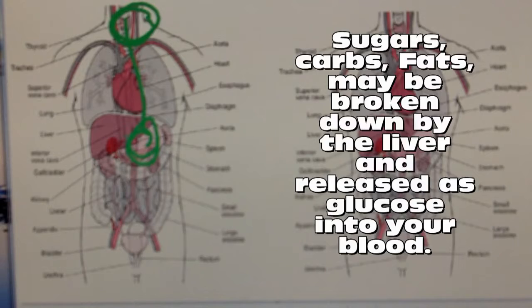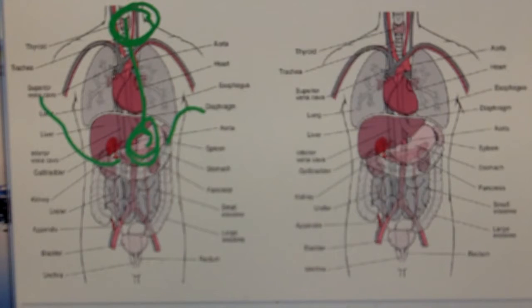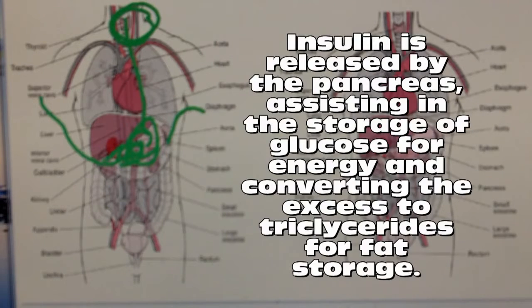Insulin is released by the pancreas and processed by the liver. Some of the glucose will turn into triglycerides which will go through your bloodstream, and some of the glucose will be converted and stored as energy in the cells.